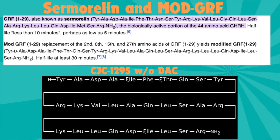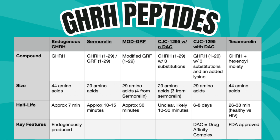Modified GRF and CJC-1295 without DAC are very structurally similar to sermorelin. Mod-GRF, as the name suggests, is modified and has an amino acid difference of 4. CJC without DAC — without the drug affinity complex that significantly prolongs half-life — has a 3 amino acid difference. You can pause here to try to discern the differences, but they are subtle and minimal. These differences are essentially made to control for half-life. Modified GRF has a proposed half-life about double that of sermorelin, and CJC-1295 without DAC is unclear, likely within the range of 10 to 30 minutes — probably similar to mod-GRF or sermorelin, which in the grand scheme doesn't make a huge difference.